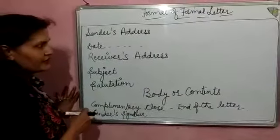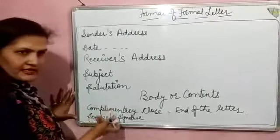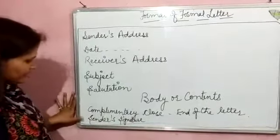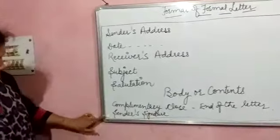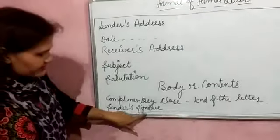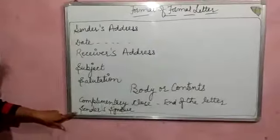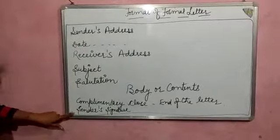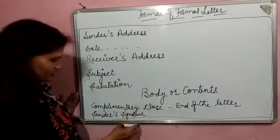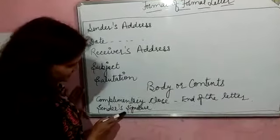And in an informal letter, we write 'Yours Loving Son,' 'Your Loving Daughter,' etc. At last, we write the sender's signature — the person who writes the letter will sign here.